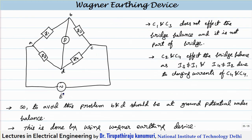Let us take an example. There is a supply E, and because it is a sinusoidal AC source, for one half cycle this potential at point A will be positive with respect to point C, and for another half cycle the point C will be positive with respect to point A, because it is sinusoidally varying with respect to the reference point. That means if we write this as a sinusoidal wave, for one half cycle it is positive, and another half cycle it is negative.